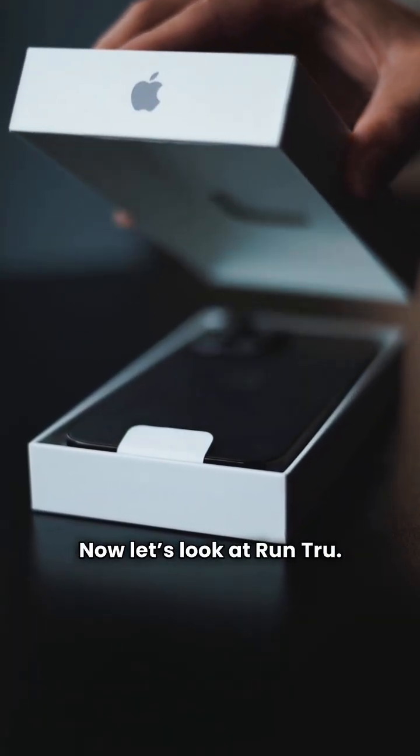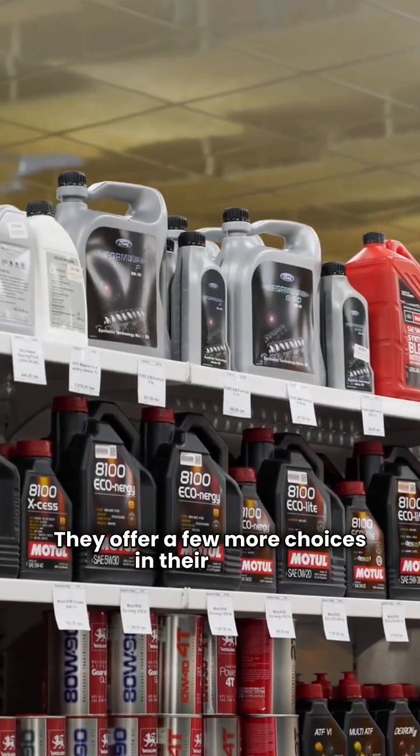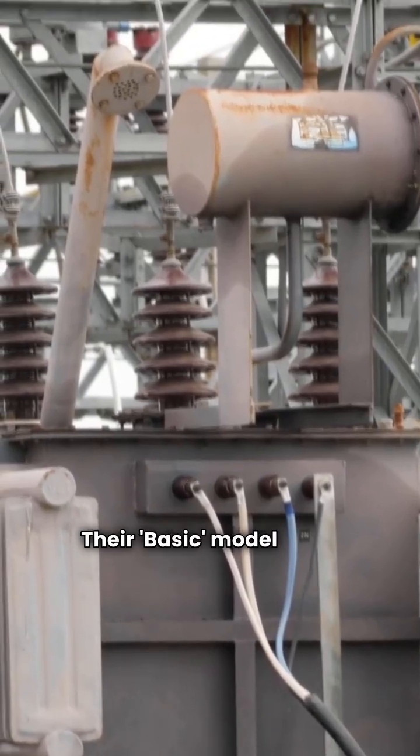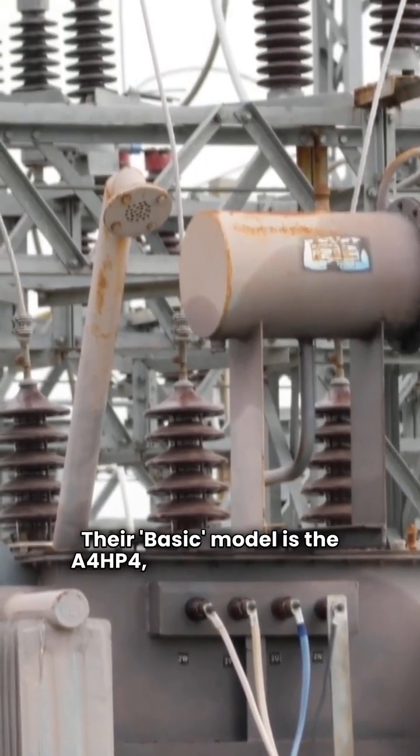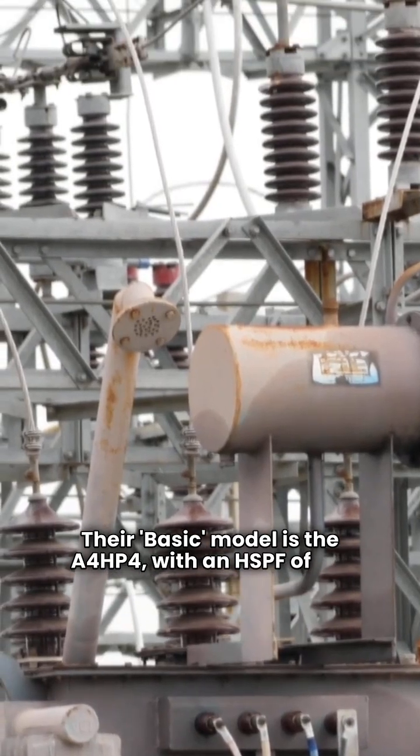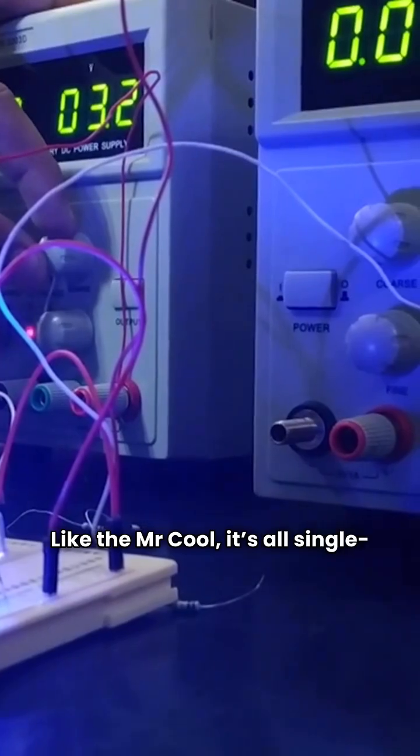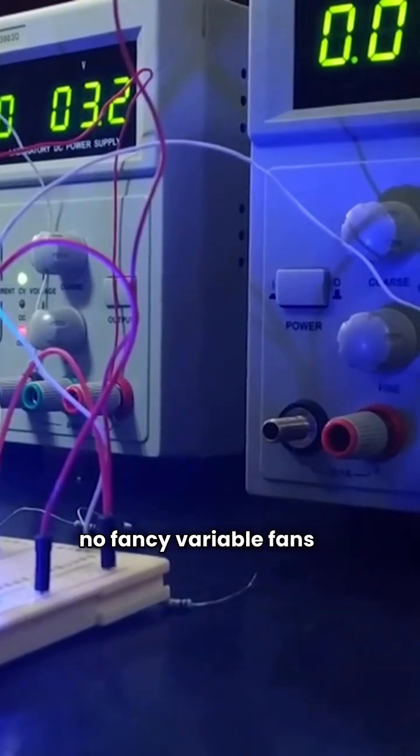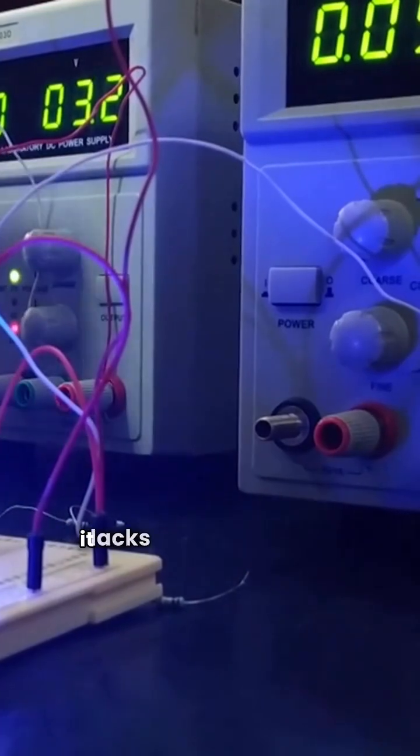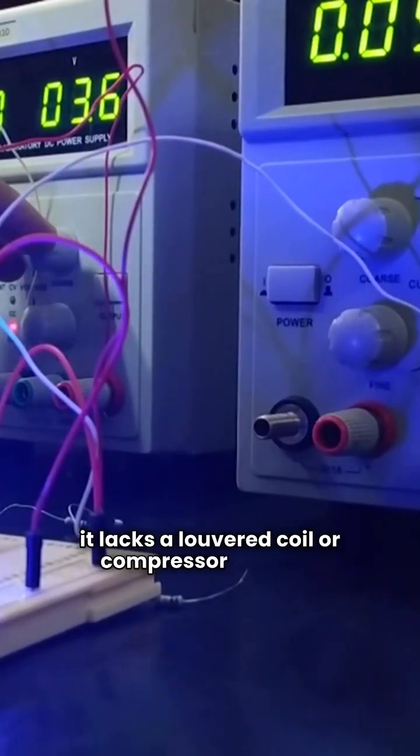Now let's look at Run True. They offer a few more choices in their lineup. Their basic model is the A4HP4 with an HSPF of 7.7. Like the Mr. Cool, it's all single speed. No fancy variable fans or compressors here and it lacks a louvered coil or compressor blanket.